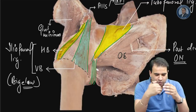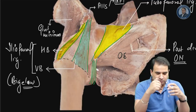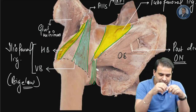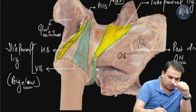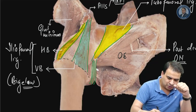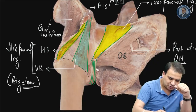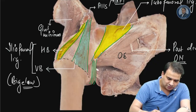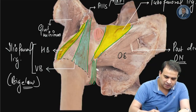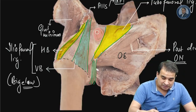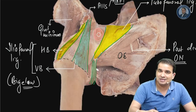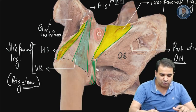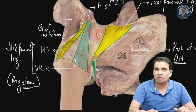Both ligaments - the pubofemoral and iliofemoral - can be appreciated from the anterior aspect. In between them you can also identify the bursa for the tendon of the iliopsoas muscle, which lies between the iliofemoral and the pubofemoral ligament.